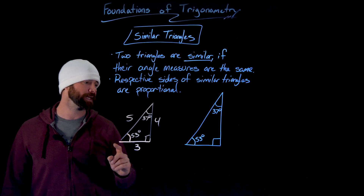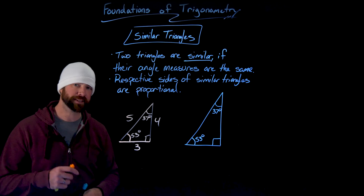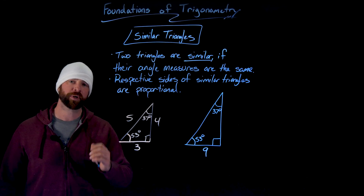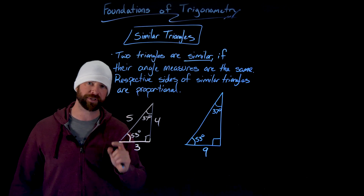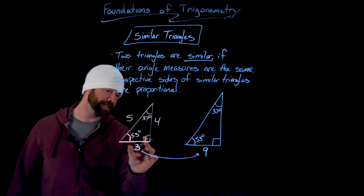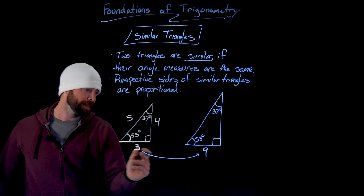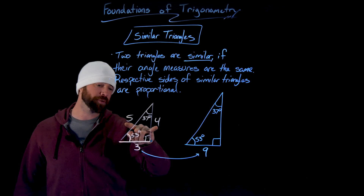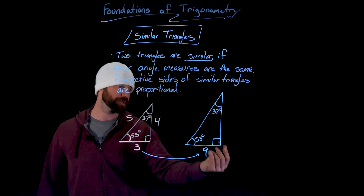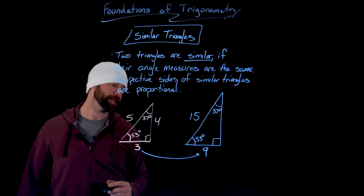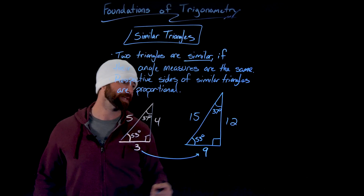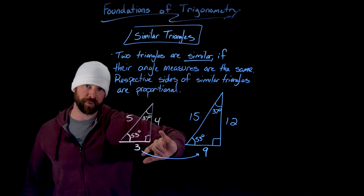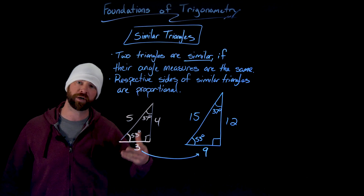If we know these triangles have the same angular measures and someone says this side is 9, right away I know the other side measures. This side — joining the 90-degree and 53-degree angles — is three times the corresponding side in the smaller triangle. So these sides must all be three times their respective counterparts: the hypotenuse is 15, and the remaining side is 12, because it's three times 4. That's the concept of being proportional.